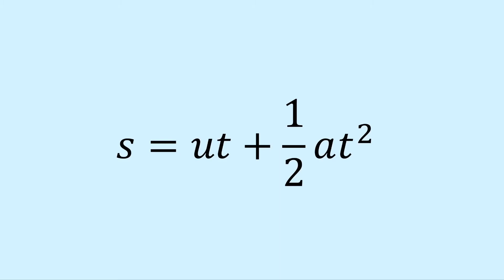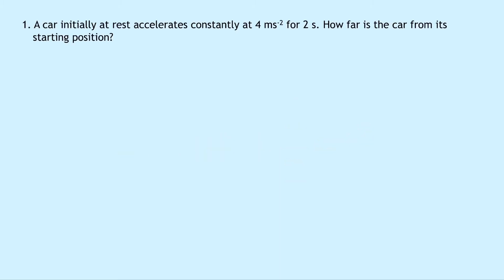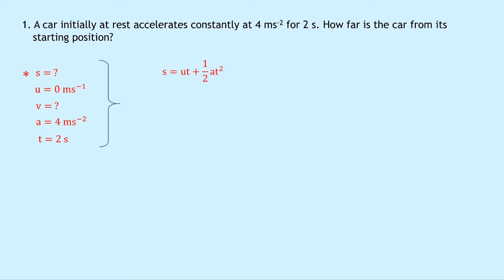Next we're going to do four worked examples using S equals UT plus a half AT squared. Question one says that a car initially at rest accelerates constantly at 4 meters per second squared for two seconds. How far is the car from its starting point? So we're trying to find S. S equals question mark, U equals 0 meters per second, V equals question mark, A equals 4 meters per second squared, and the time is 2 seconds. Writing down S equals UT plus a half AT squared and substituting in gives zero plus a half times 4 times 2 squared. Don't forget the square — putting that into your calculator gives a final answer of 8 meters.